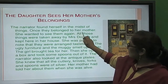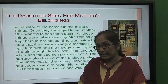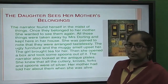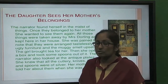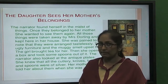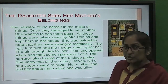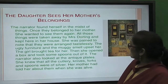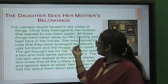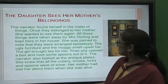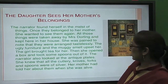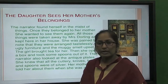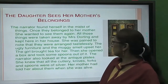The narrator found herself in the midst of familiar things when she entered the house. The room contained things that belonged to her mother — though it was a strange room, it felt familiar because of the atmosphere. The things had once belonged to her mother, and she had wanted to see them again; that is why she came there. All those things had been taken away by Mrs. Darling and kept in her house.